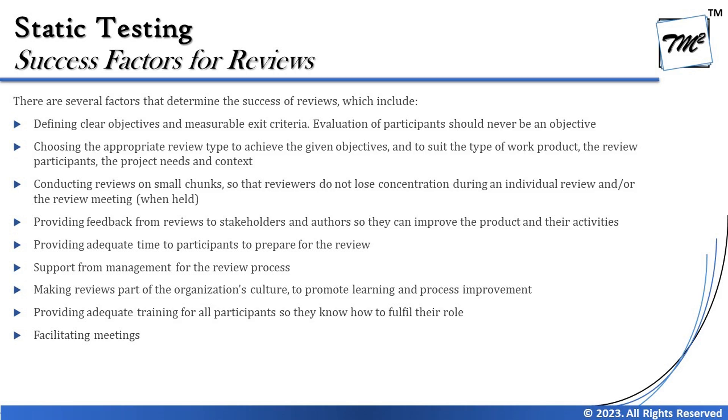Conducting reviews on small chunks is also important, so that reviewers do not lose concentration during an individual review or review meeting. You should not take a large chunk of work at once. For example, a requirements document can be 100 pages, but that does not mean you should review all 100 pages at once. Break it into small chunks — say 25 pages or certain sections at a time — review those, then move to the next set. Break your work and simplify it as much as possible for more effective and efficient reviews.